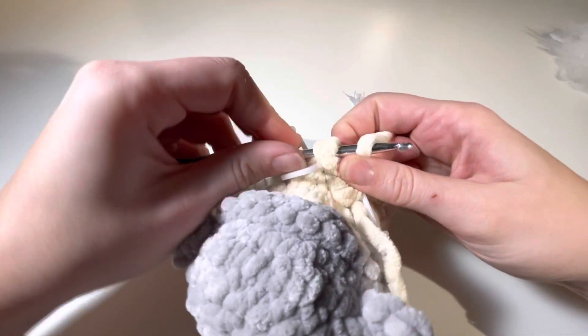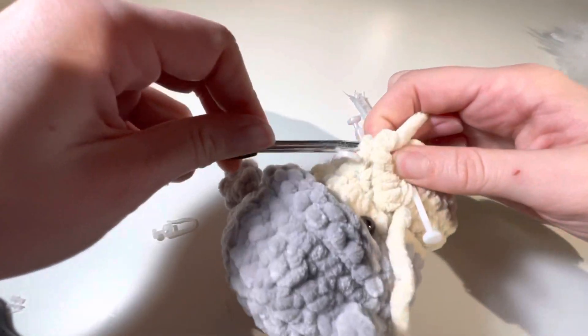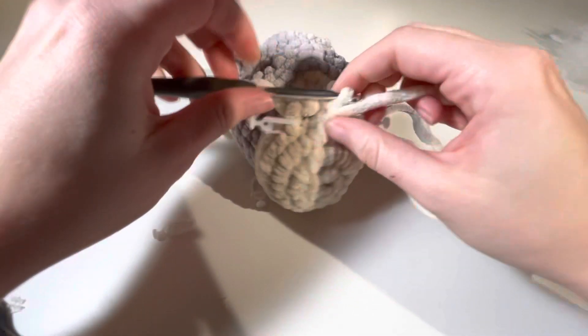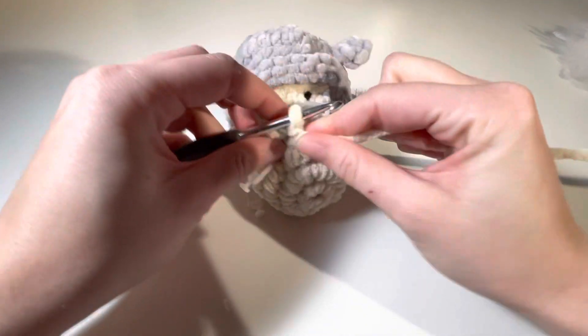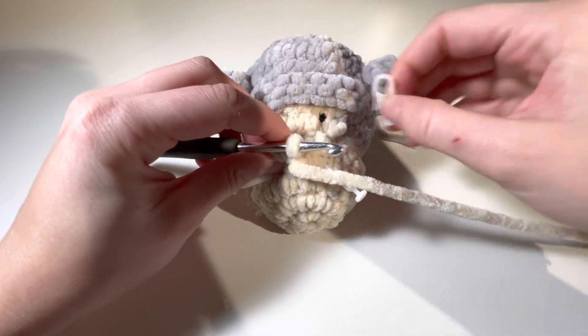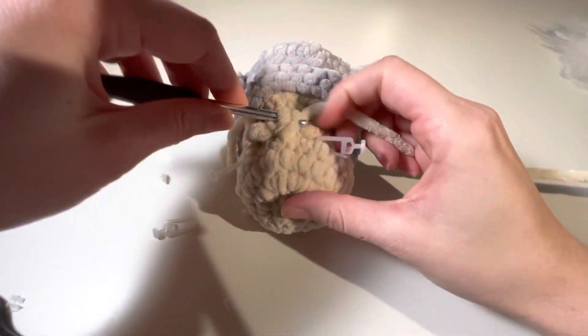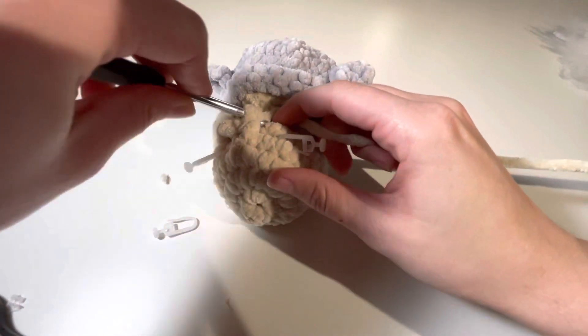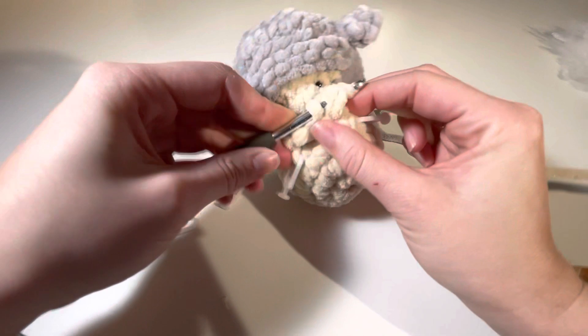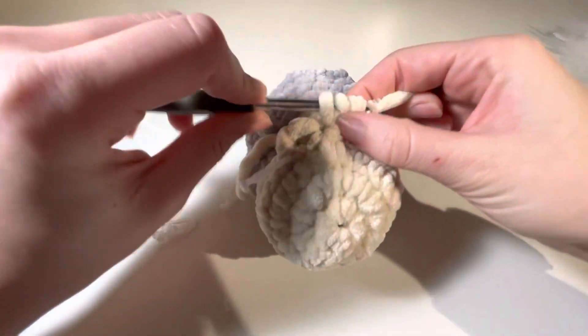So I'm going to yarn over and go through all three. It's a bit fiddly with such a tiny hook. I'm going to turn it back around so that the face is facing me, the snout. And I'm going to do an htc three into this stitch under the eye. So one.